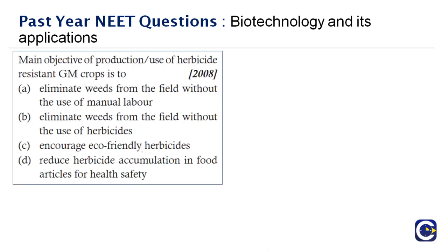Next question: the main objective of the production or use of herbicide-resistant GM crops is to — we have to analyze the statements. To eliminate weeds from the field without manual labor — wrong. To encourage eco-friendly herbicides — no. To reduce herbicide accumulation in food articles for health safety — option D is the right answer.